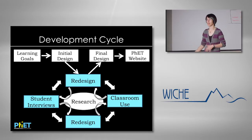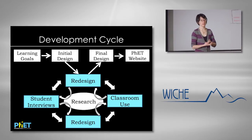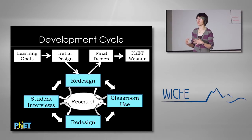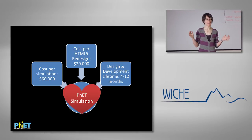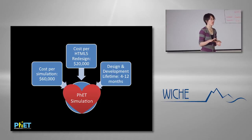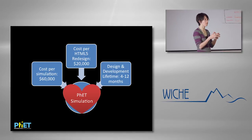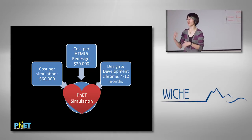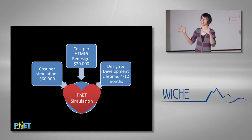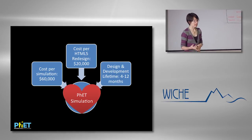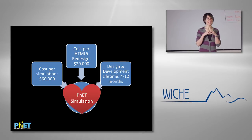We go through many cycles before we publish a final design on the website. In terms of time and funds, developing a simulation from scratch costs about $60,000. Taking one of our old Java simulations and converting it to HTML5 — so it runs on your iPad, for example — costs about $20,000, and depending on how simple or complex the simulation is, that process can take anywhere from four months to a year.